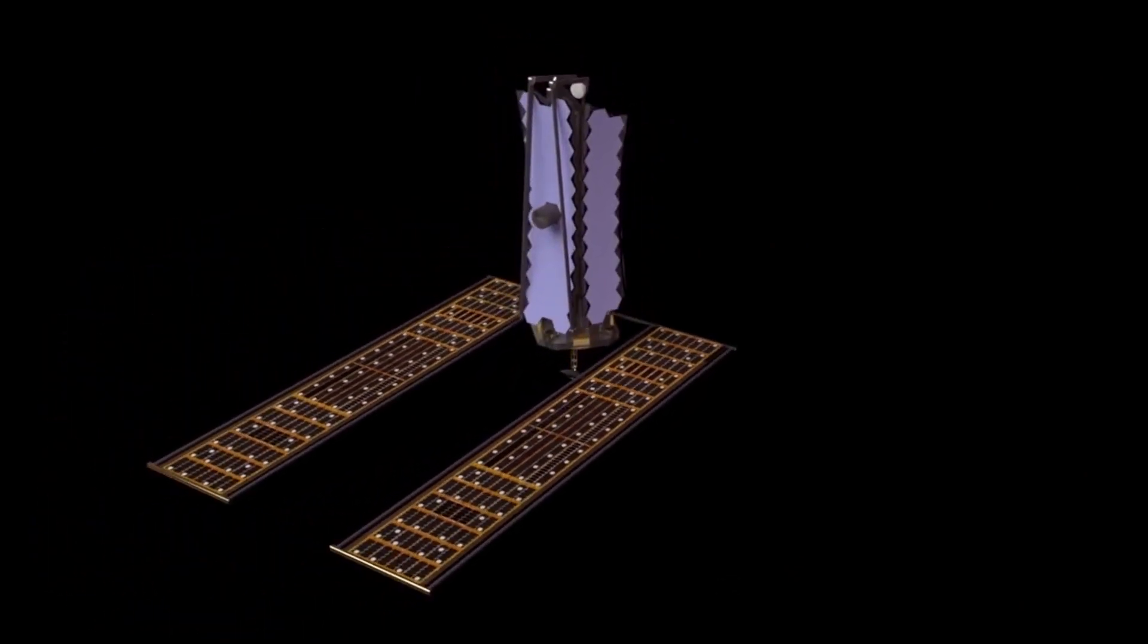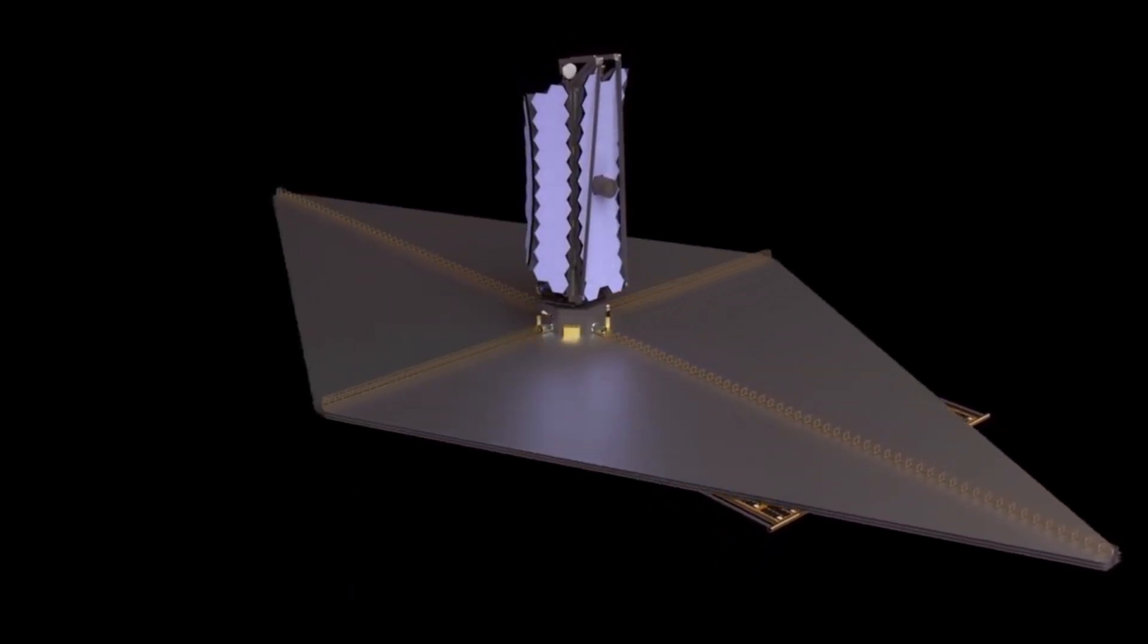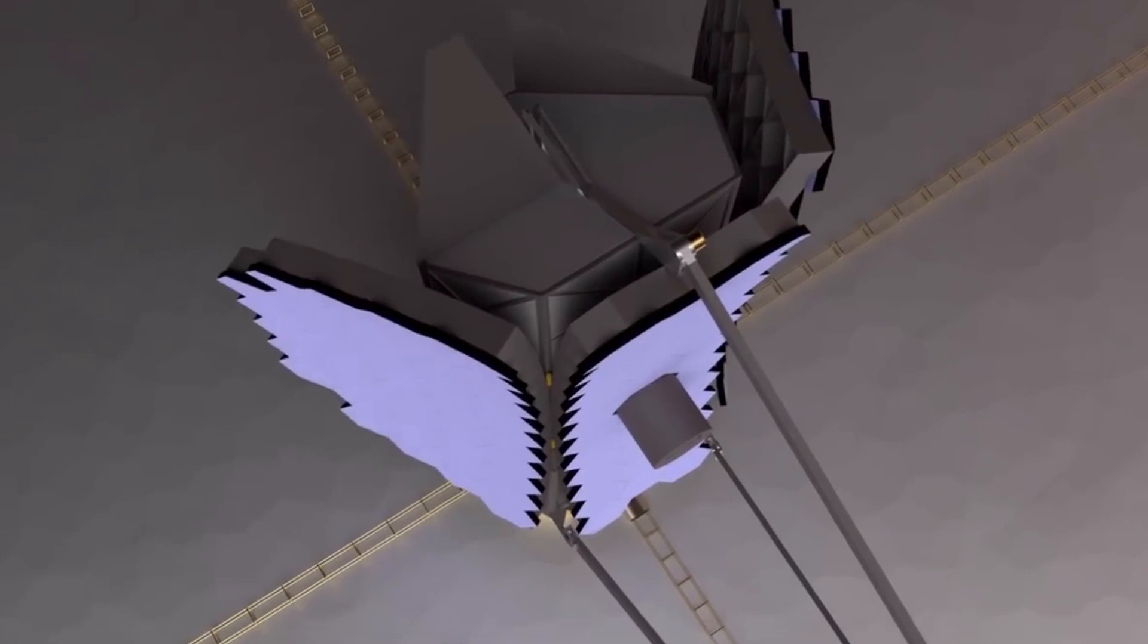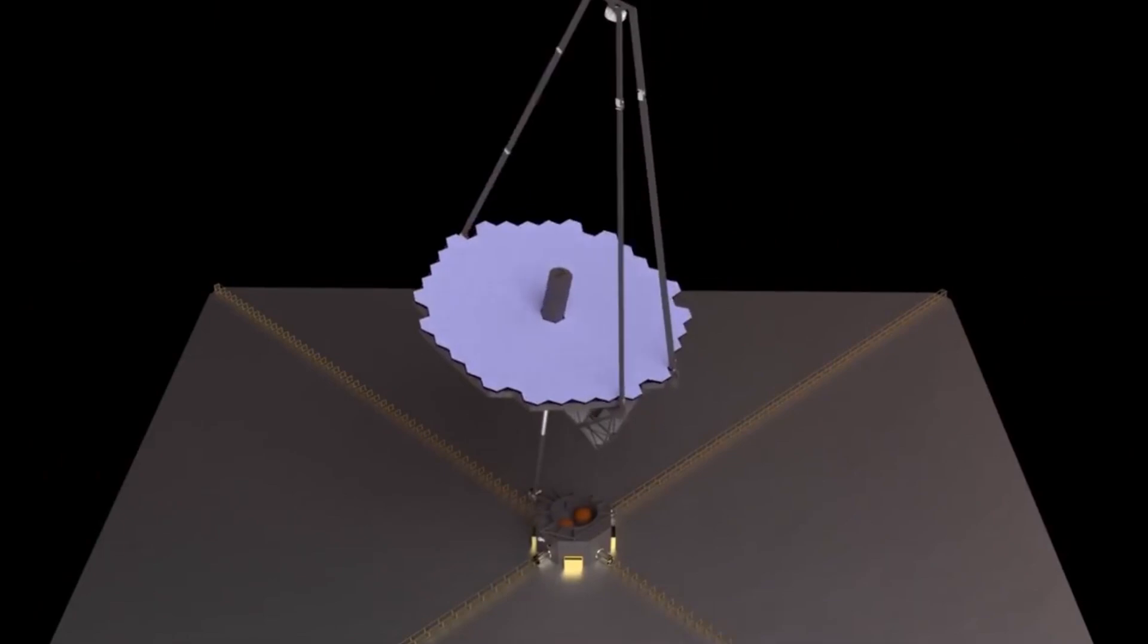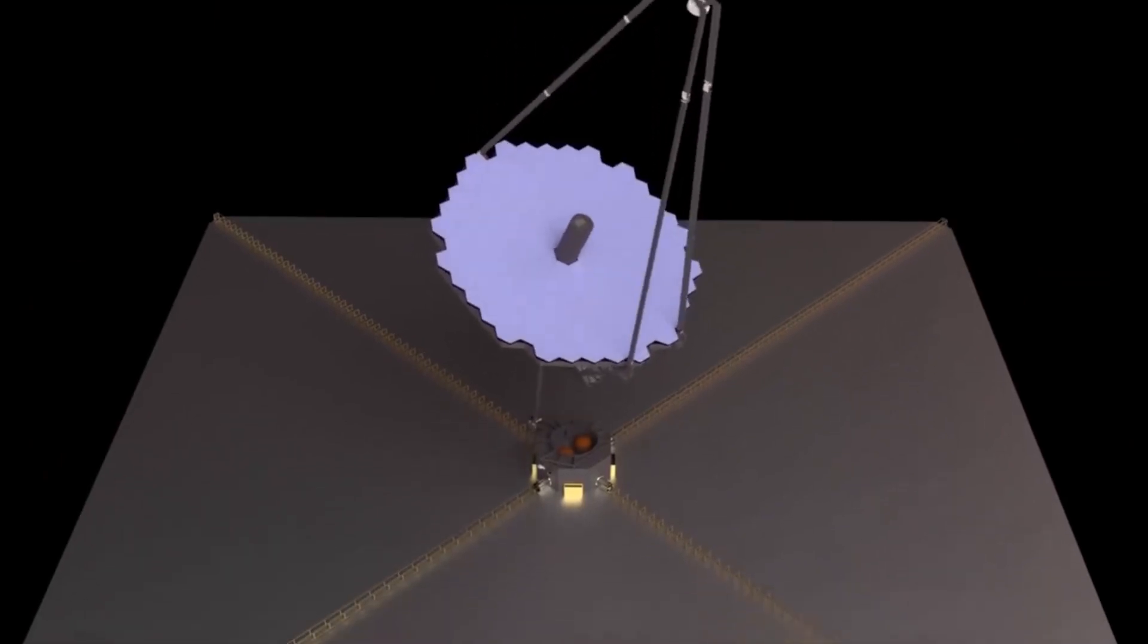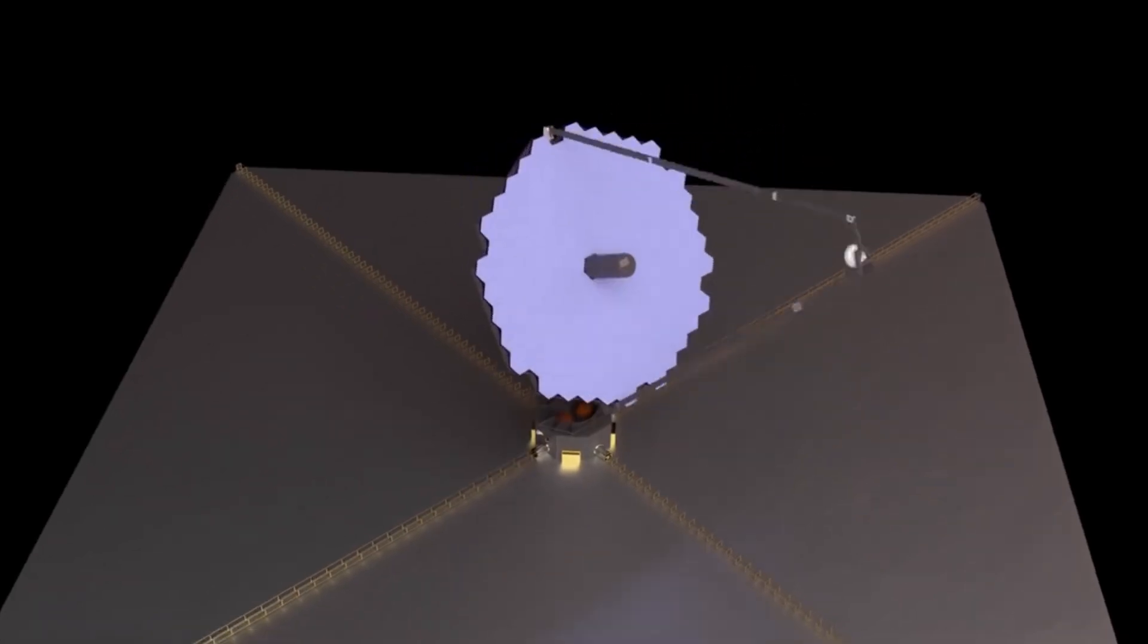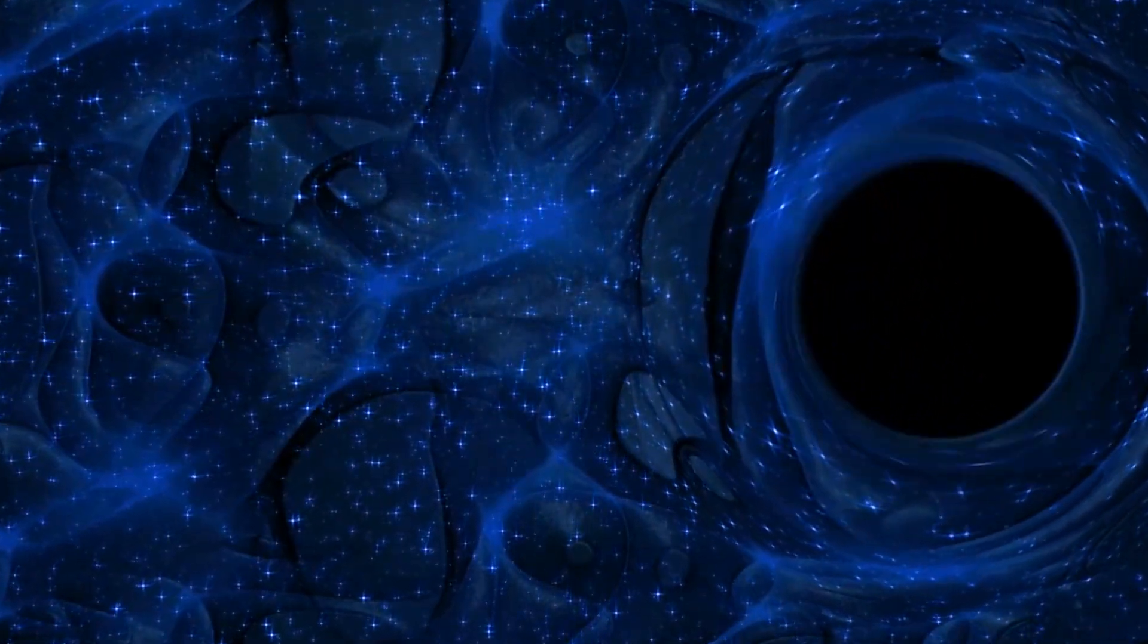This week, the James Webb Telescope also unraveled its sunshield, all five layers of it, in what is considered the most riskiest part of the deployment operation. The kite-like 70-foot umbrella will keep the scientific instruments in sub-zero shade to be able to pick up infrared signals from the outer reaches of the universe. The shield will be deployed to protect the space telescope from the light of the sun, the Earth, and the moon, and can protect it in temperatures of up to 230 degrees Fahrenheit.